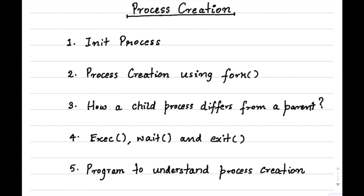Hello friends. In the last video we learned about different states of the process in an operating system. In this video we are going to learn about process creation. We talked about a state called 'new' in the last video, which was the first state a process goes into. We will cover the init process, process creation using fork, how a child process differs from a parent, system calls like exit, wait, and _exit, and finally write a program to understand process creation.